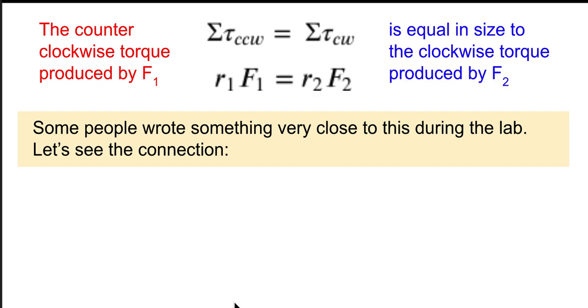So some people within the lab got to the point where we predicted what we would see or how we could find the distances and the masses. And I want to show you why what you got was right. So if we are talking about weights as our forces, then our weights are m times g. And so for force one, it would be m one times g. And for force two, it would be m two times g.